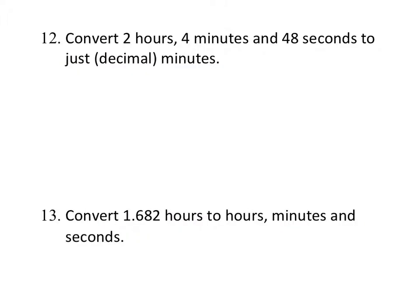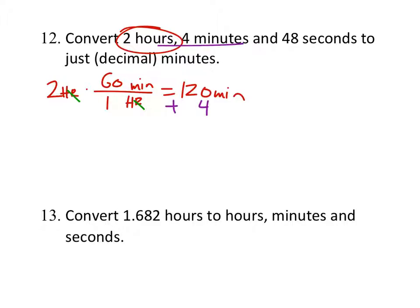Convert 2 hours, 4 minutes, and 48 seconds to just minutes with decimals. So we've got to figure out how many minutes are in 2 hours. So 2 hours. We'll convert this to minutes. So hours and minutes. 1 hour is 60 minutes. So this is 120 minutes. Now we still have this 4 minutes right here, so we'll add it to that. But let's figure out how many minutes 48 seconds is.